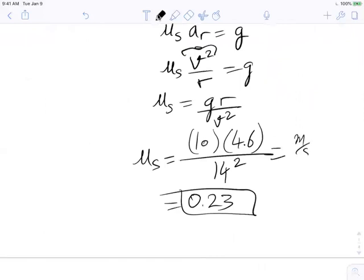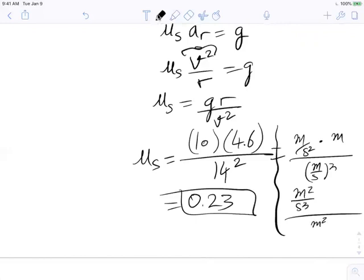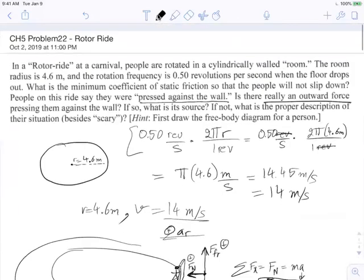There are no units. This was meters per second squared times meters on top, and the speed is squared, so meters times meters becomes meters squared per second squared divided by meters squared per second squared—it cancels out. A coefficient of static friction is just a number. That's it for part A. They ask for what's the minimum coefficient of static friction so people won't start slipping and falling down.